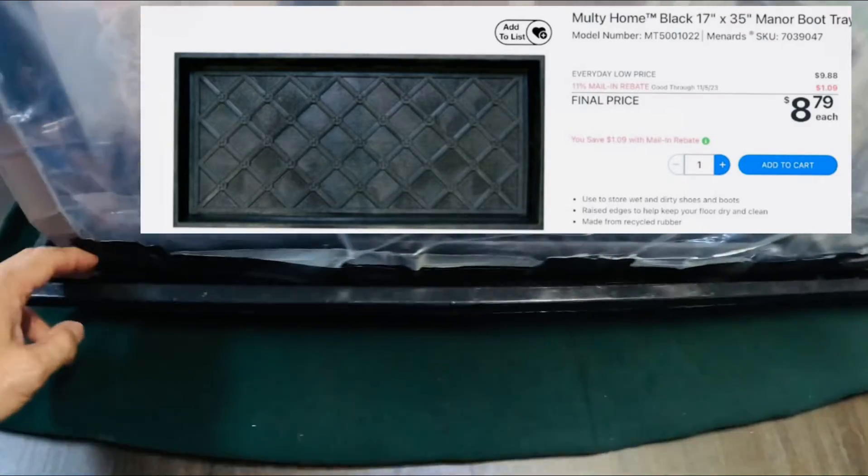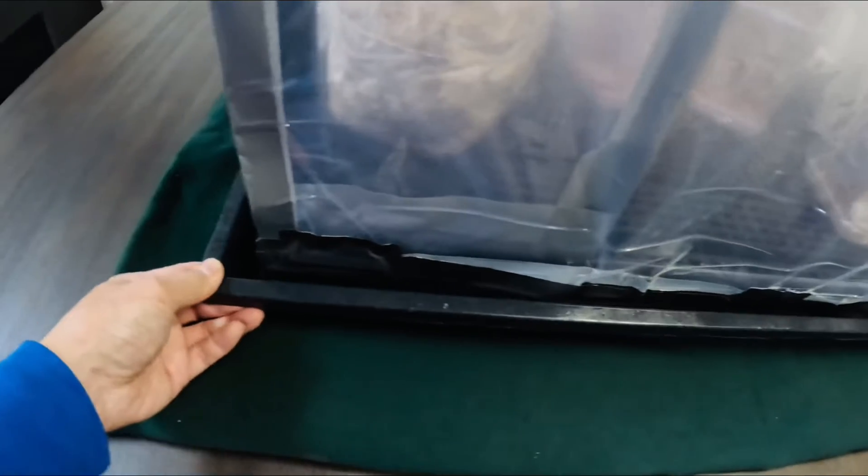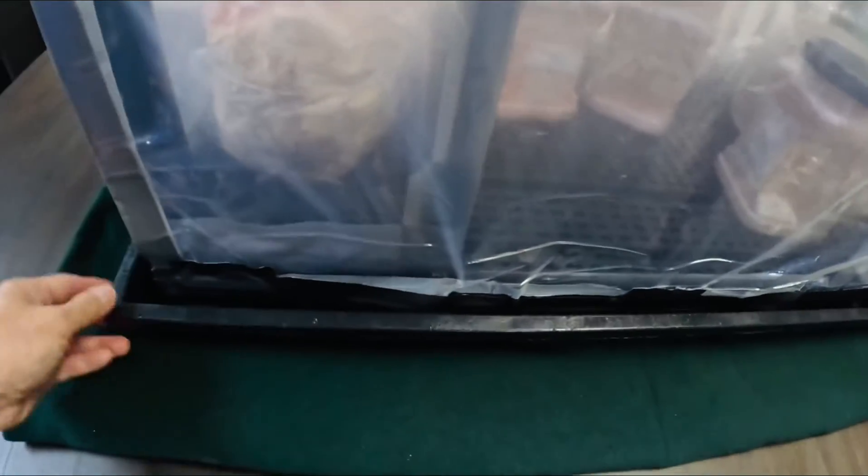Inside the fruiting chamber, I have pink and yellow oyster mushrooms and lion's mane mushroom in a half-gallon container. At the bottom of the rack is a boot tray that collects the water and moisture coming out of the fruiting chamber.